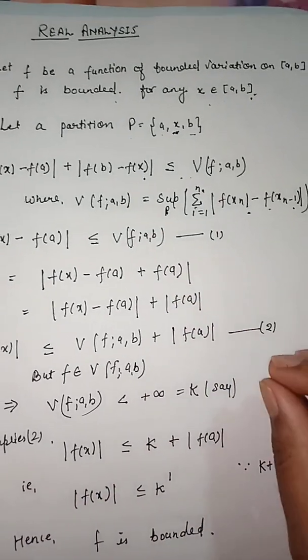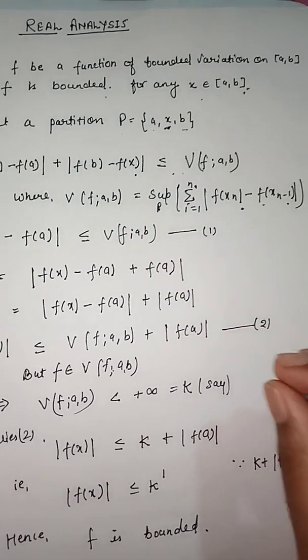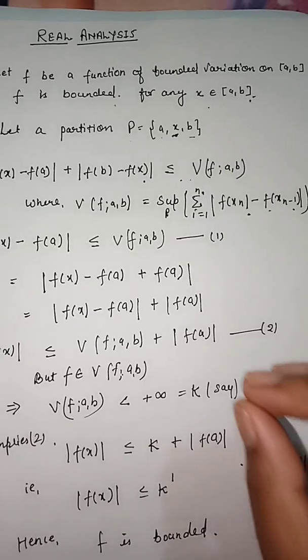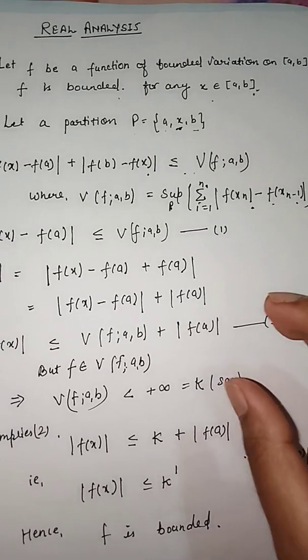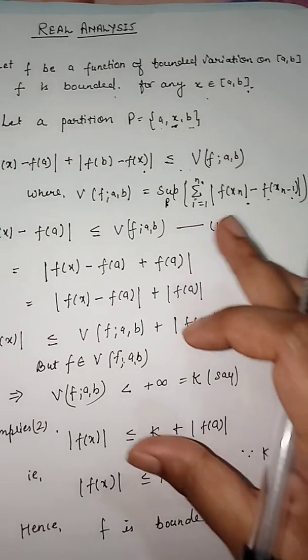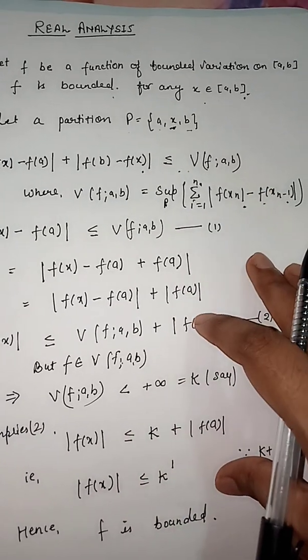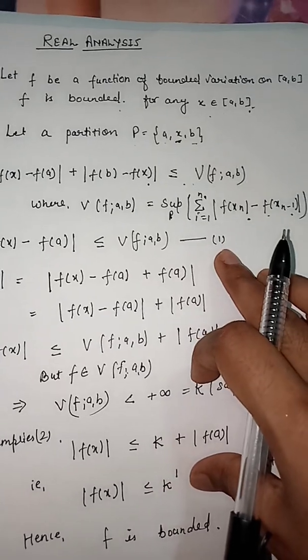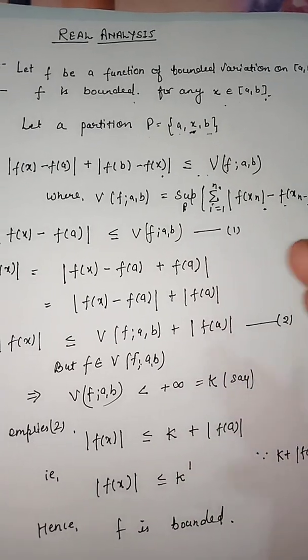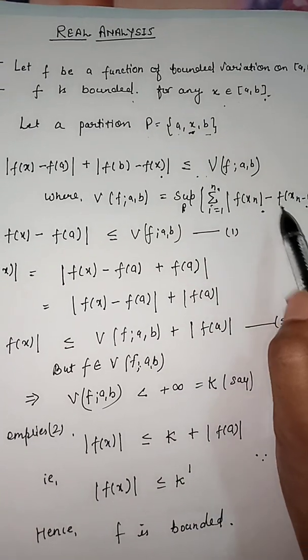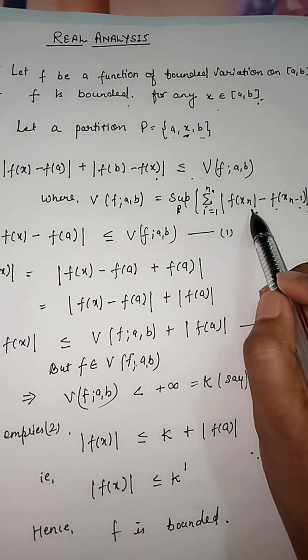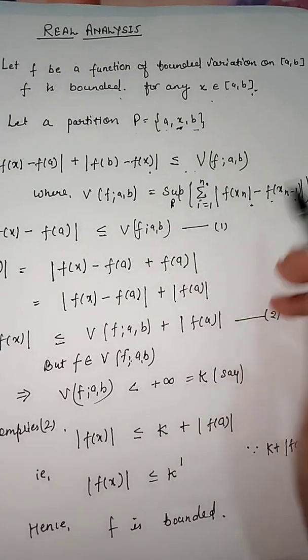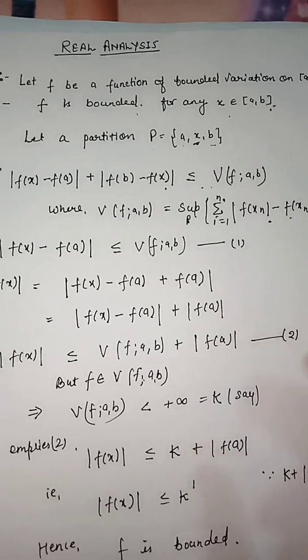Bounded variation means that the function is a real-valued function whose total variation is bounded by a finite number. If the total variation is bounded by some finite number, the function is said to be of bounded variation.